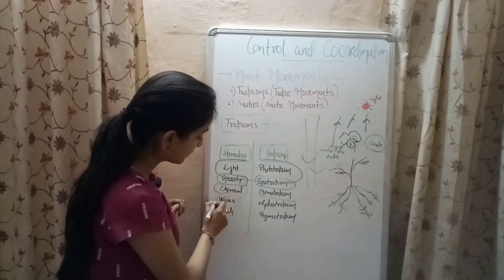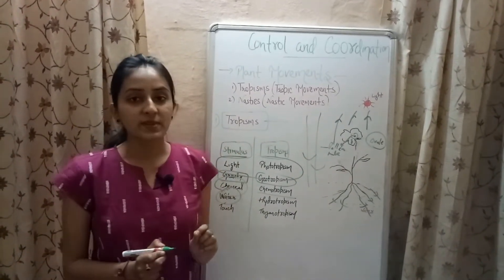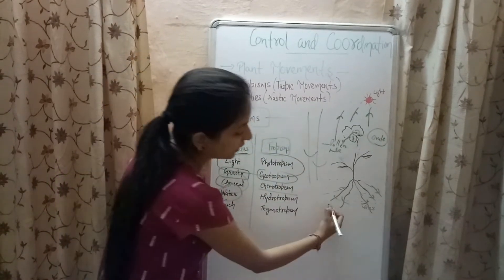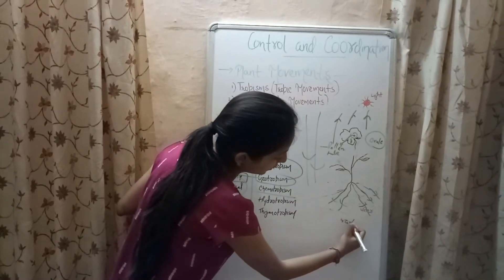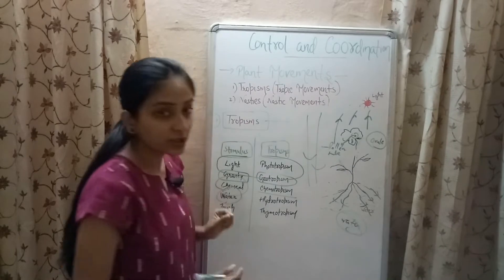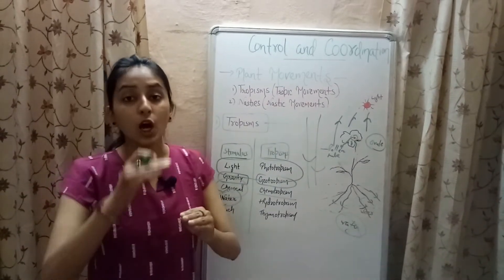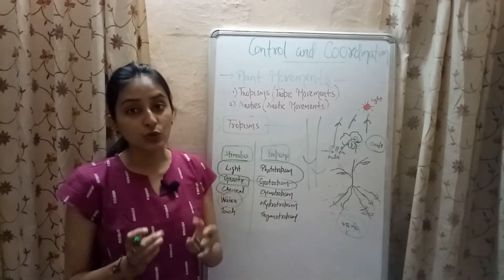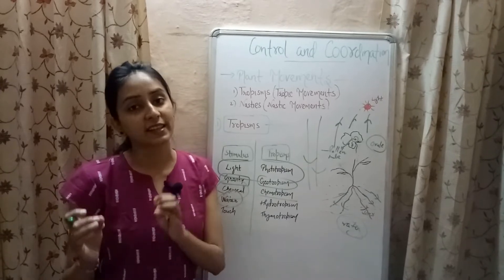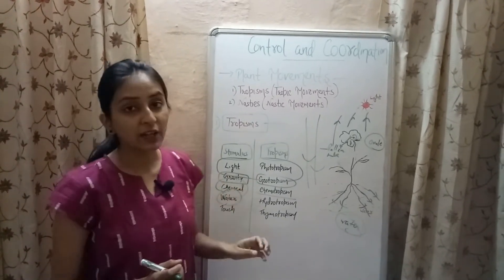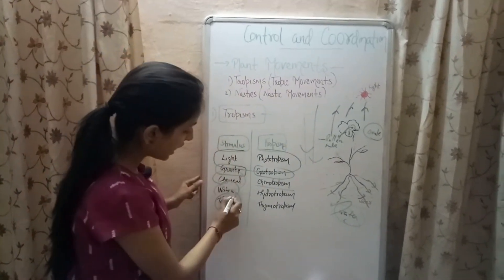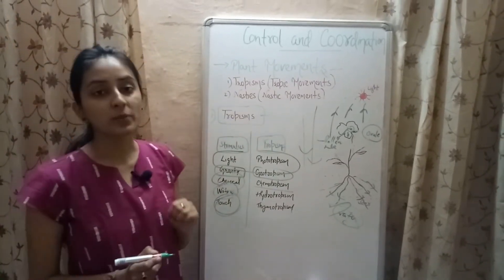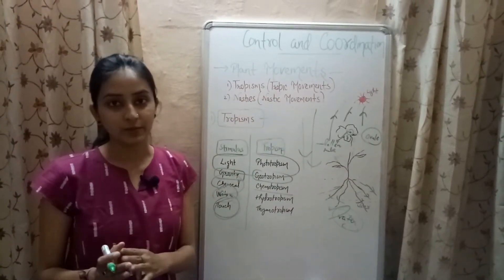When the stimulus is water, the tropism is known as hydrotropism. Roots move in the direction of water — wherever water is available, roots grow toward it. So the movement of roots toward water is an example of positive hydrotropism.